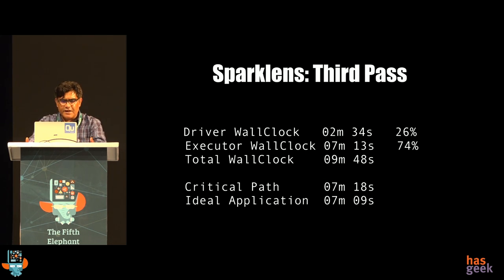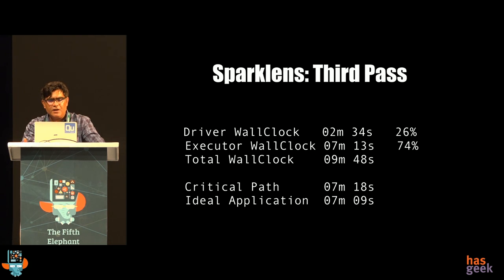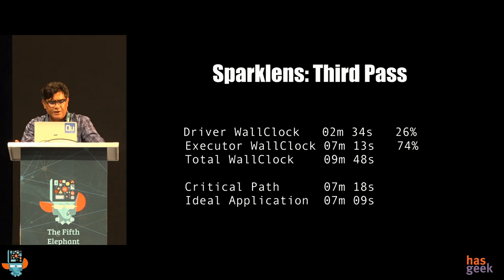Two interesting things to note: the critical path at this point is about seven minutes, and the ideal application is also about seven minutes. What it tells us is that adding more executors is not going to help. We are performing in a way where there is hardly any skew. This is a definition of a highly optimized application — if your critical path and application path are essentially the same, you have achieved nirvana in the Spark world. This is where you know your application is truly scalable.